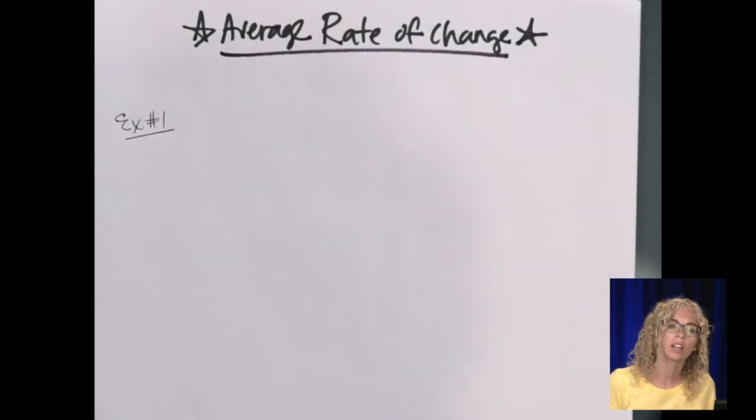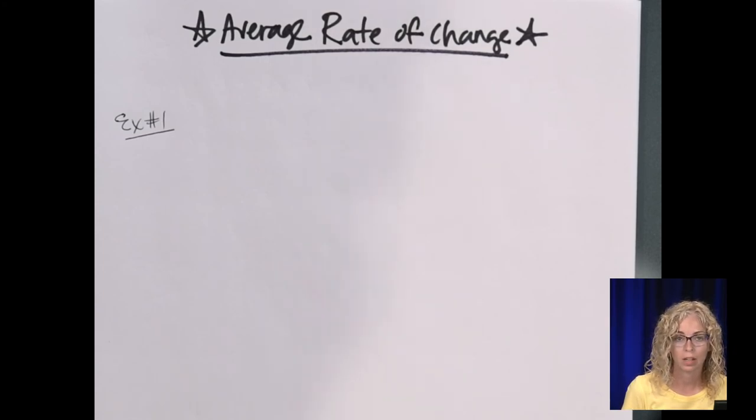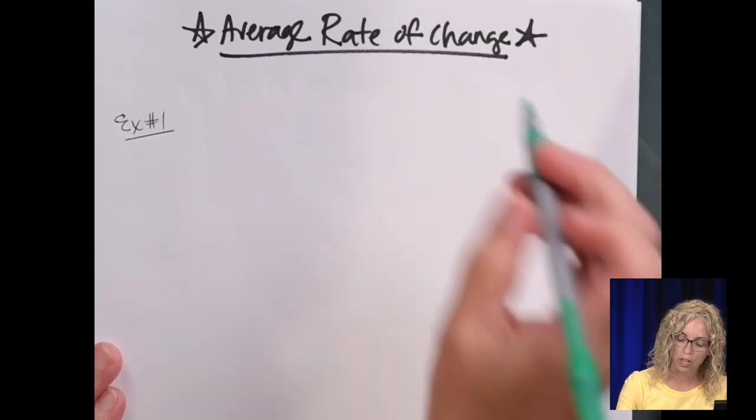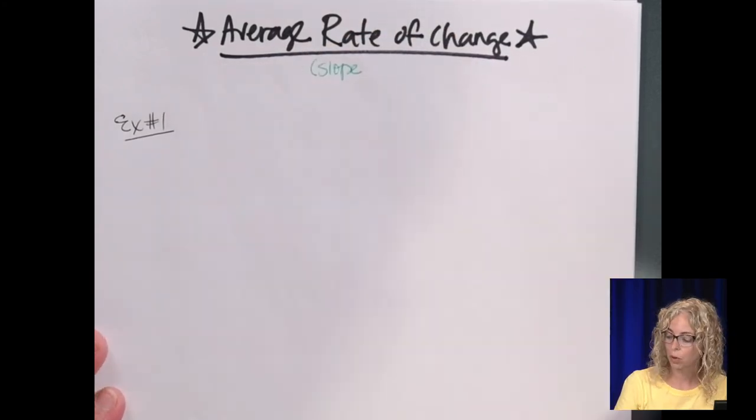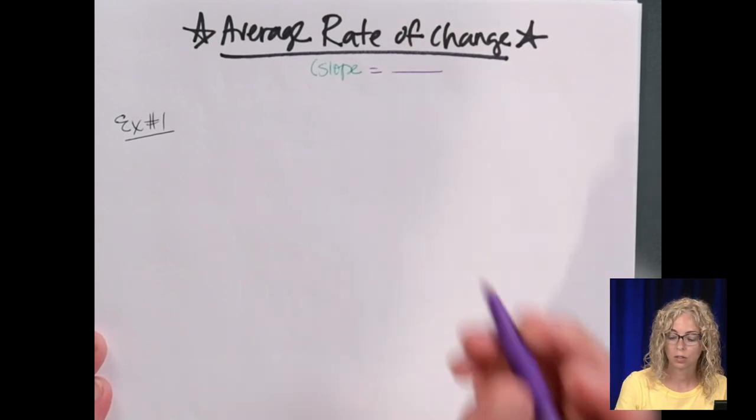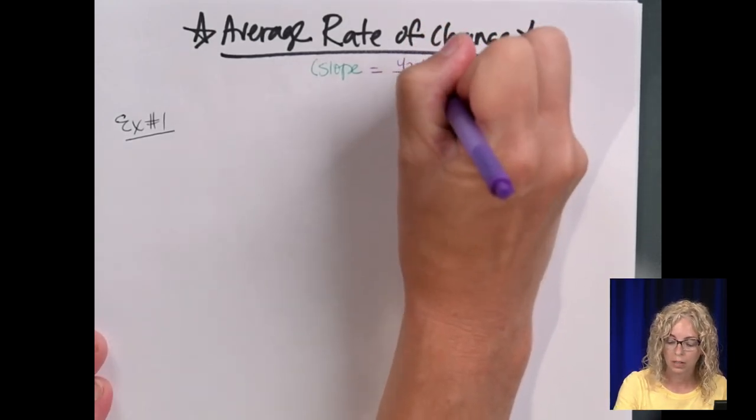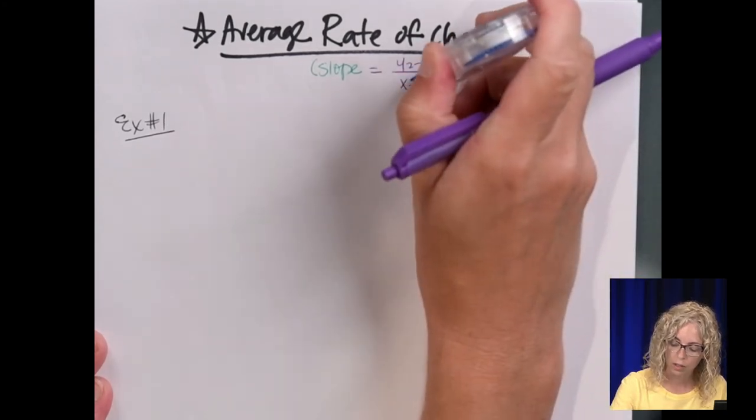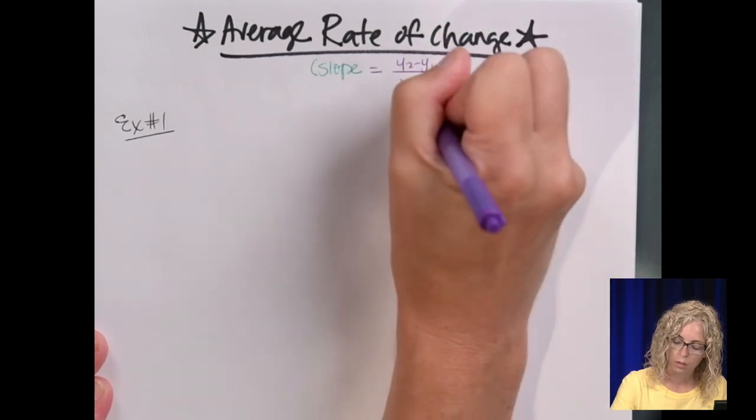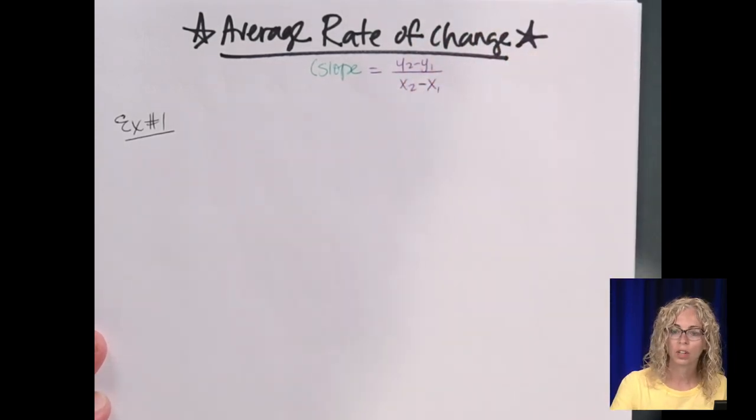Good morning. So moving on to the notes for day 3, or Wednesday. Today we're going to focus on average rate of change. Another word for average rate of change is slope. And the slope formula is y2 minus y1 over x2 minus x1. You might have heard of it as rise over run.